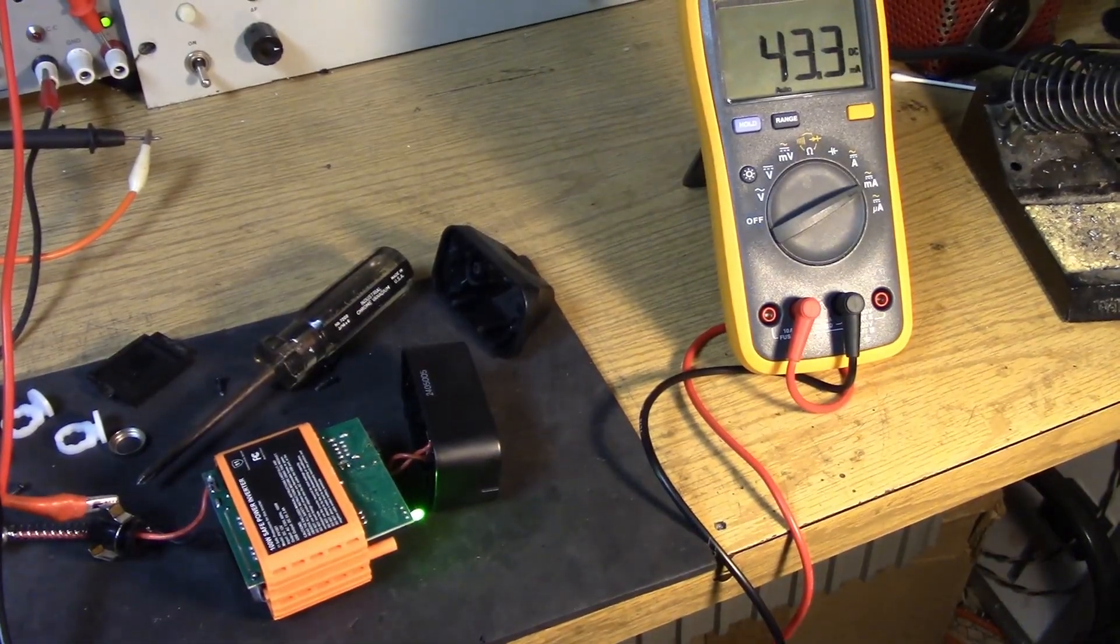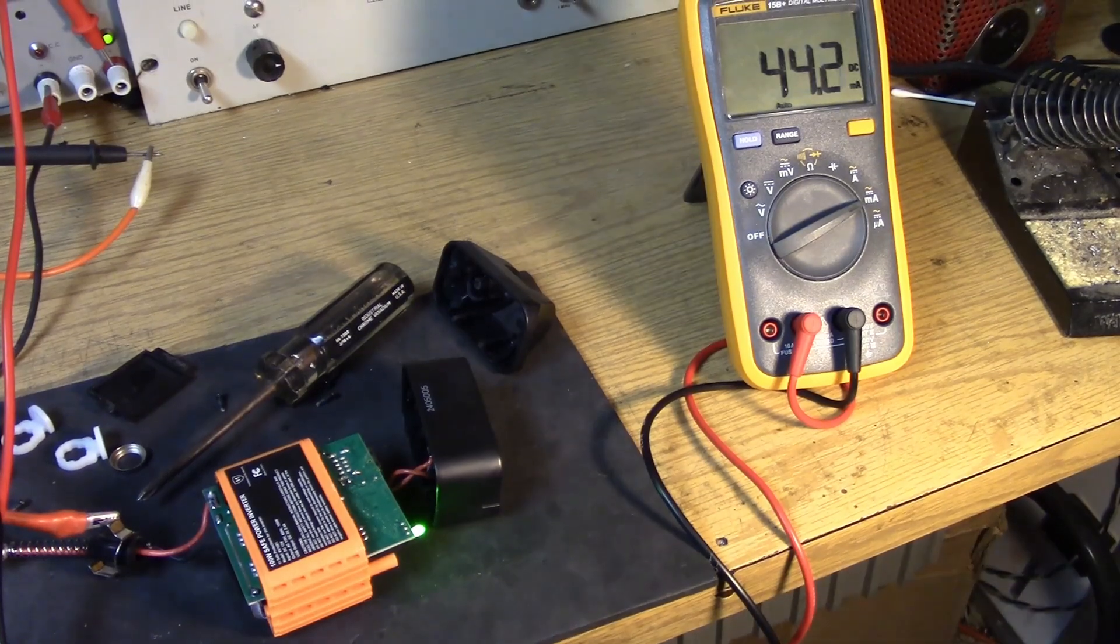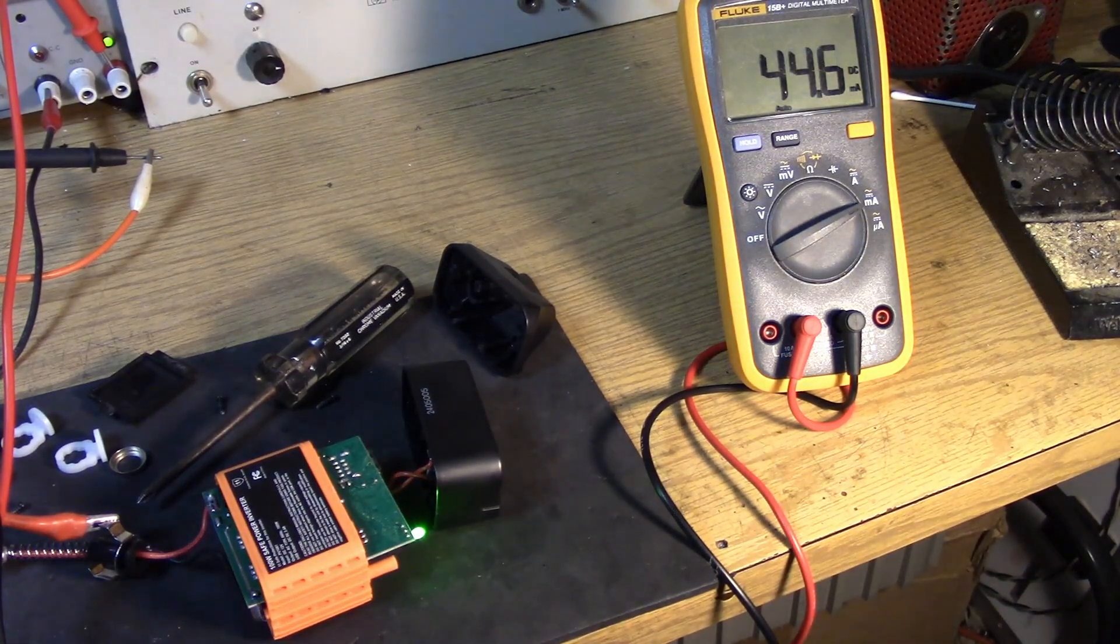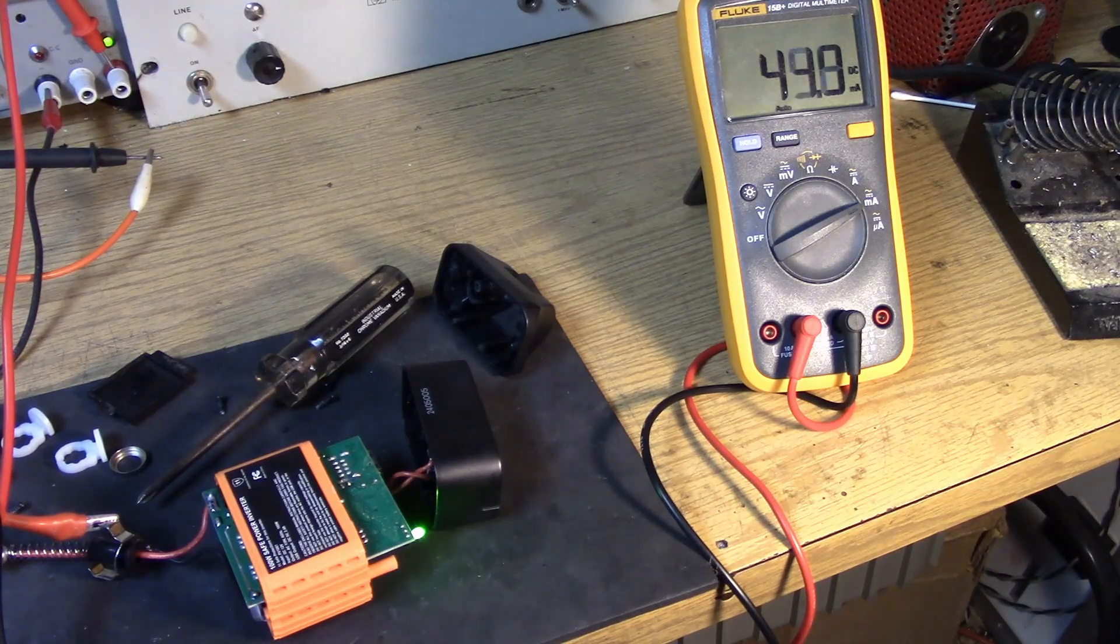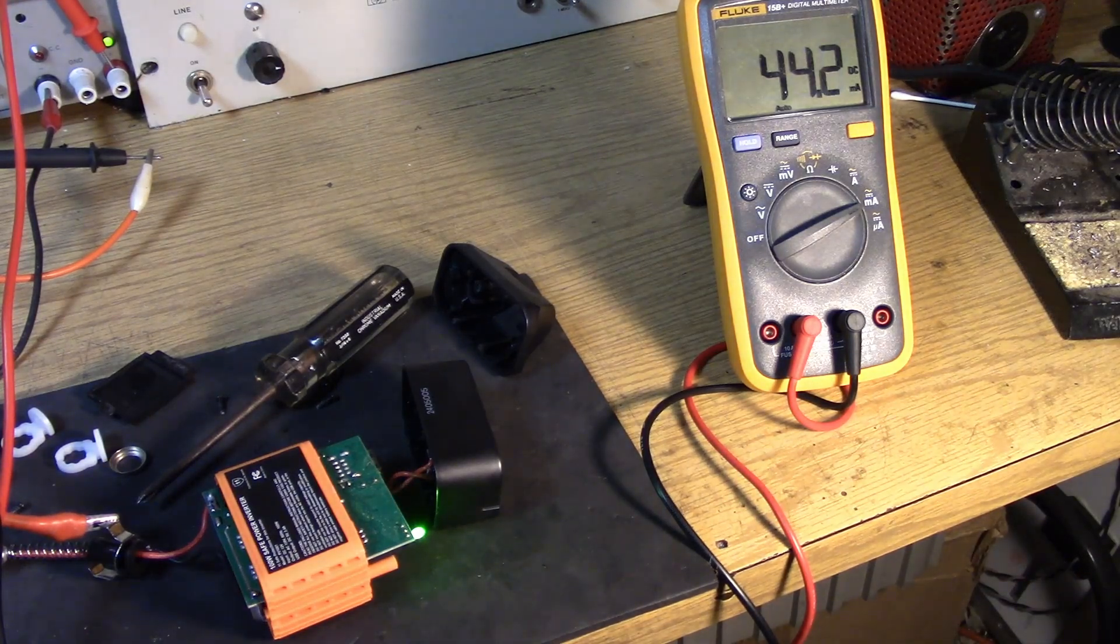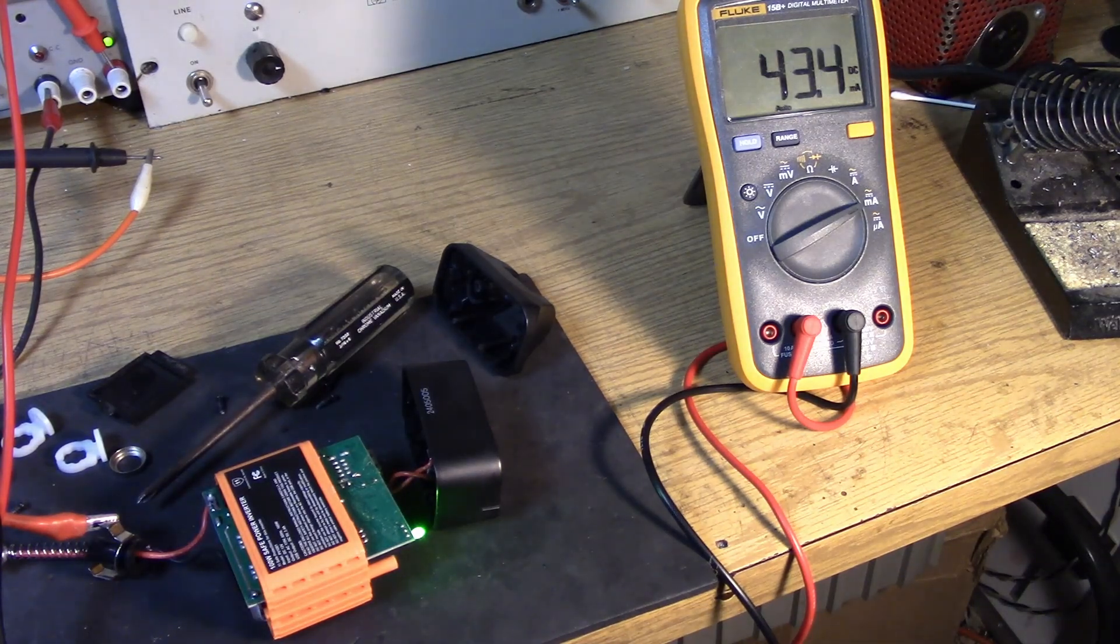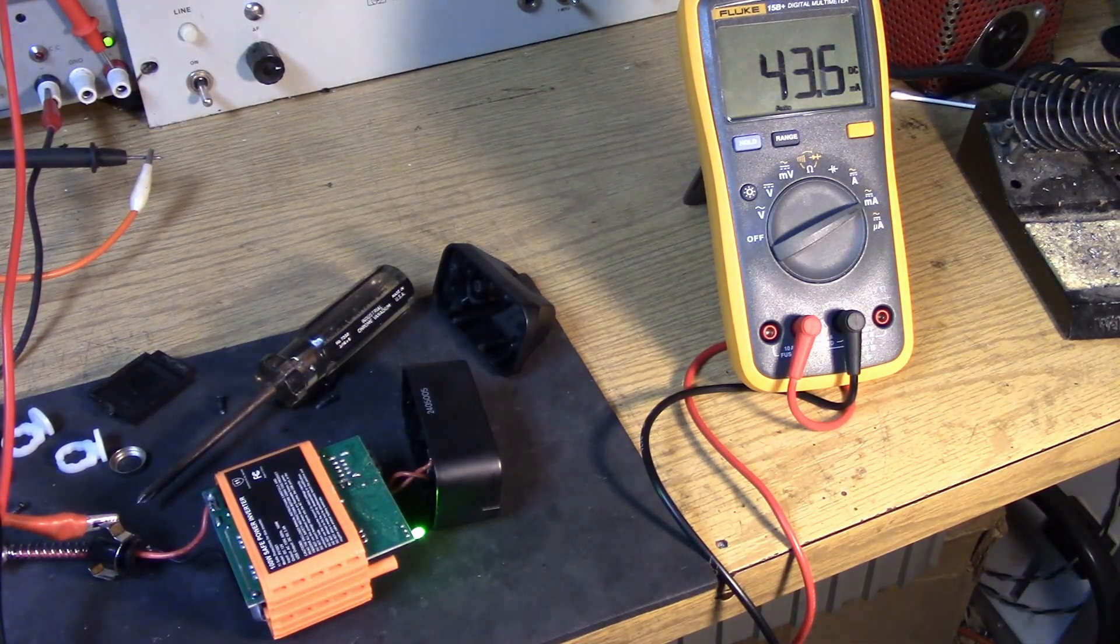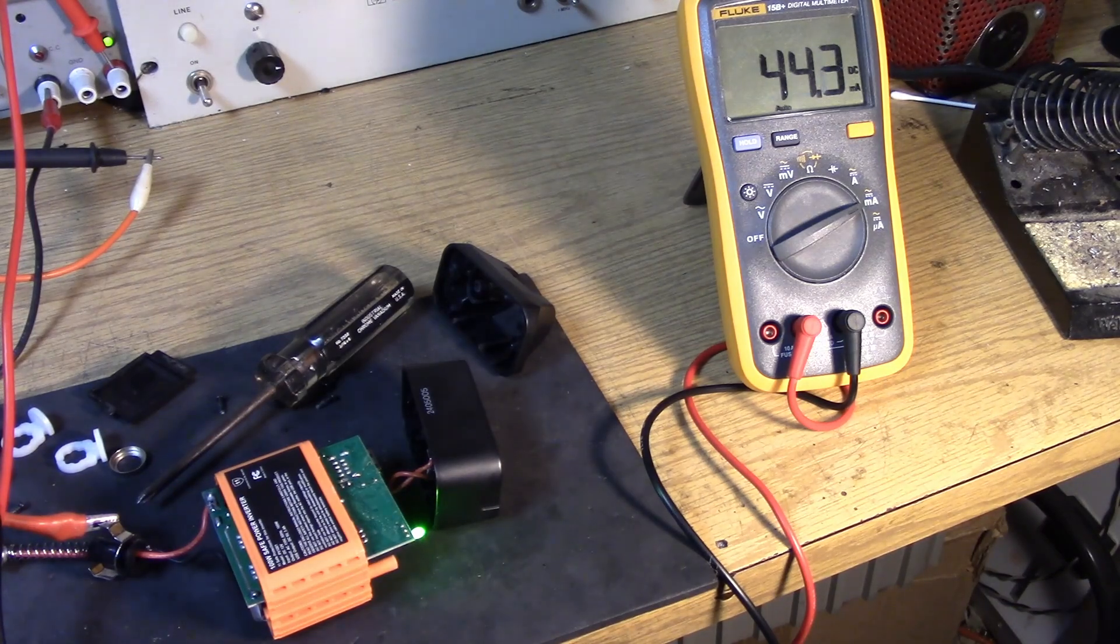So, the next important thing to measure is what is the quiescent current or the amount of current the device takes when it's not supplying any power. Looks to be about 43 milliamps. That's important. We don't want this thing to be on all the time. We only want to activate it when we are in the transmit position.